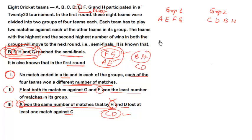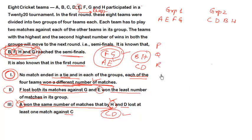Now let's find the number of matches each team won within their groups. From Condition 1, all 4 teams in a group won a different number of matches. Let's assume there are 4 generic teams P, Q, R, S in a group where everyone played everyone else exactly 2 matches, giving 12 total matches, and each team won a different number.